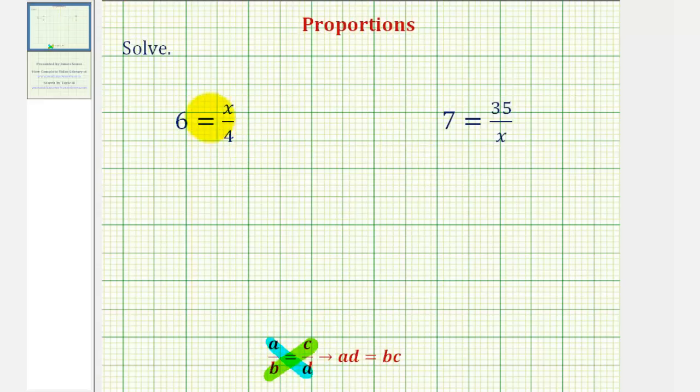But again, looking at our first example, notice that the left side is not written as a fraction or a ratio. So the first thing we'll do is write six as six over one equals x over four.